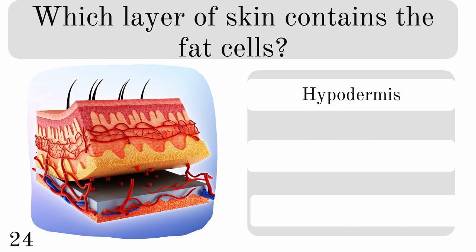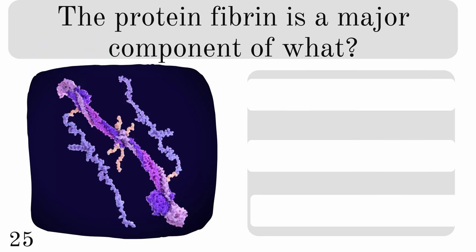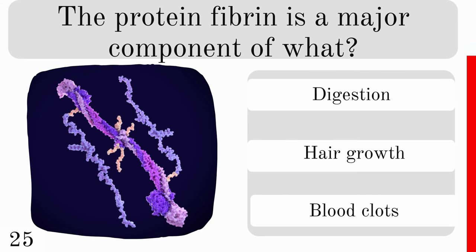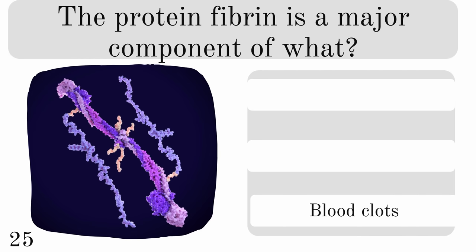The protein fibrin is a major component of what? Is it digestion, hair growth or blood clots? And the correct answer is blood clots.